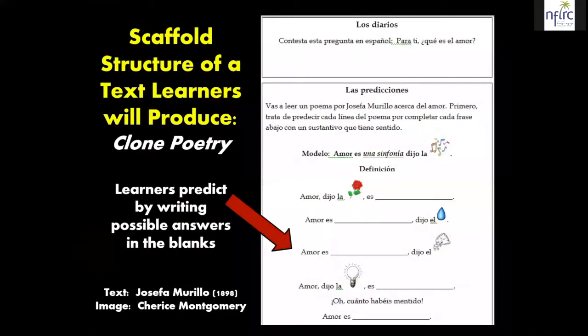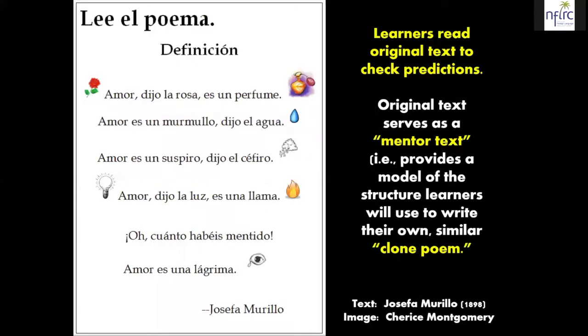For more advanced learners, like university-level students, I might ask them to answer a question in Spanish — for you, what is love? Then they make predictions about the text by filling in blanks from the poem they're supposed to read: 'Love said, the rose is blank,' 'Love said blank,' 'Love is blank, said the drop of water.' After they've filled in their predictions, I give them the real poem. They're reading to check their predictions, having already interacted with the poem's structure creatively. The original text then becomes a mentor text — a model of structure that learners use to write their own similar poem.